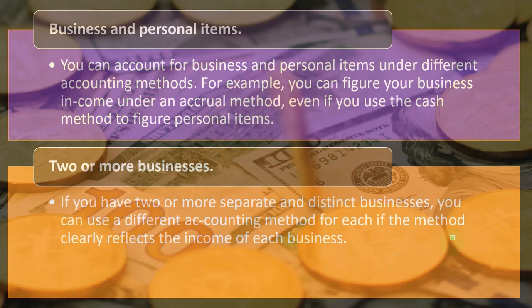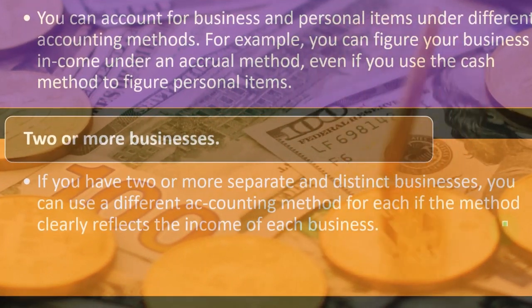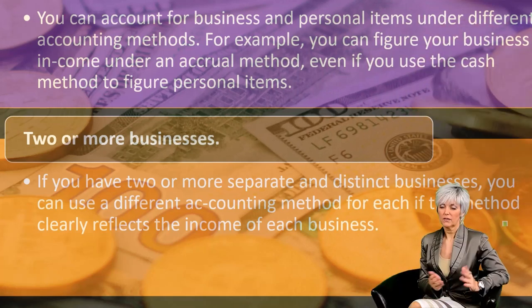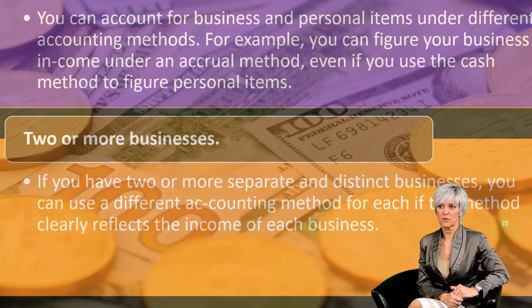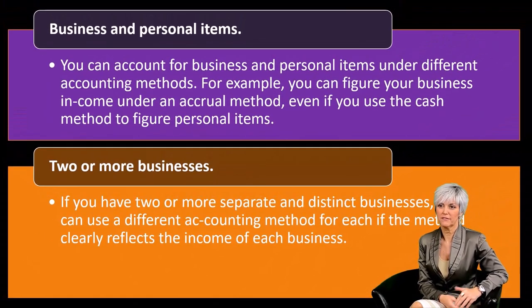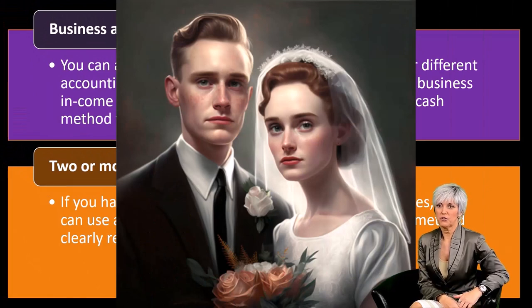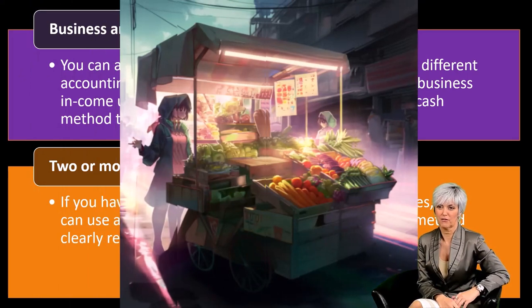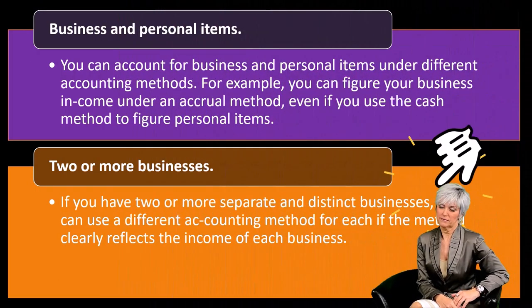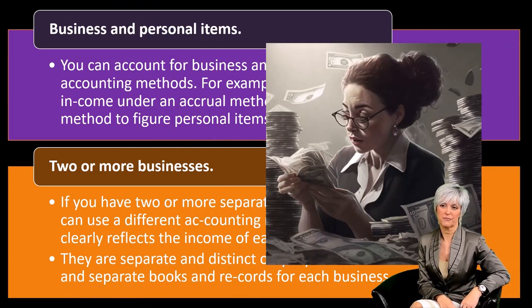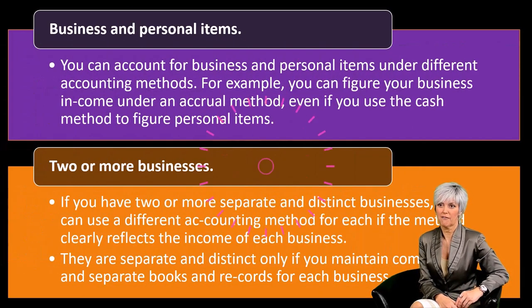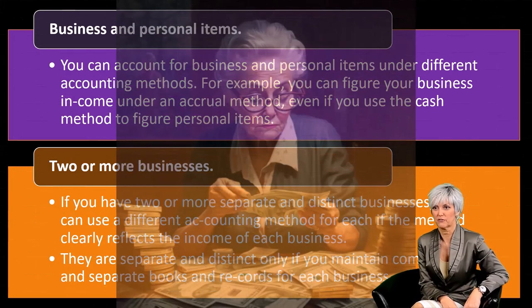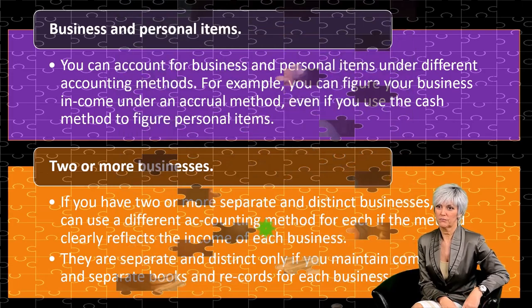If you have two or more separate and distinct businesses, you can use a different accounting method for each, if the method clearly reflects the income of each business. For example, with two Schedule C's — possibly a married couple or a sole proprietorship with two distinct businesses — one might make sense on an accrual method and the other on a cash basis method. You can use two different methods because they're two different businesses, and you should be keeping the accounting separate. They are separate and distinct only if you maintain complete and separate books and records for each business.